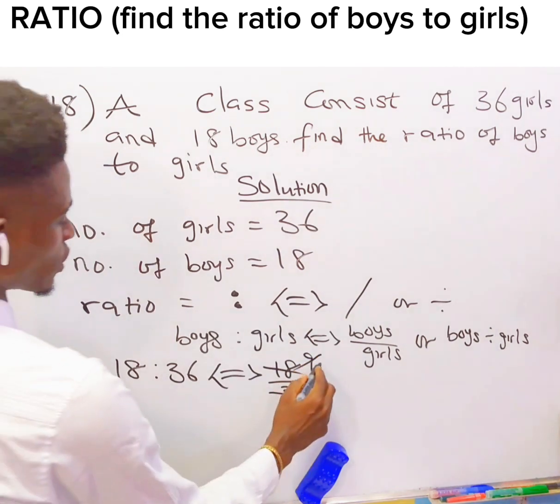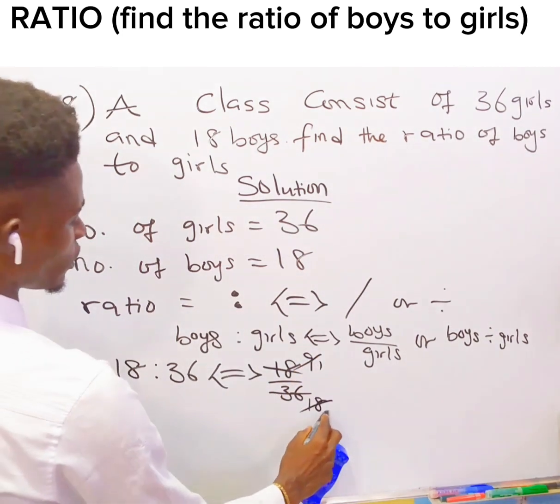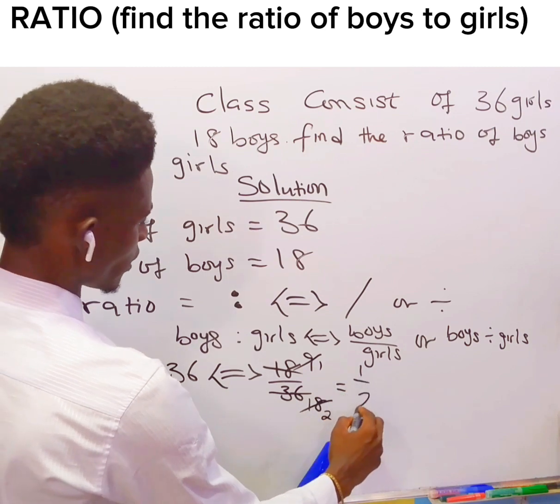Also, 9 can divide 9, which is 1, and 9 can divide 18, which is 2. That means our final value is 1 over 2.